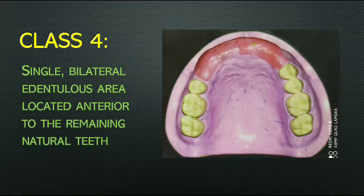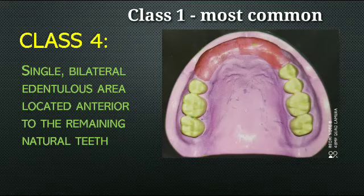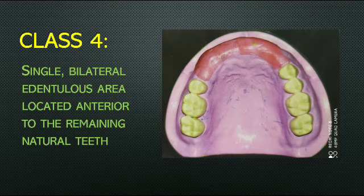Class one is the most common class, whereas class four is the least common. The most frequently seen class in patients is class one, while class four is seen the least.